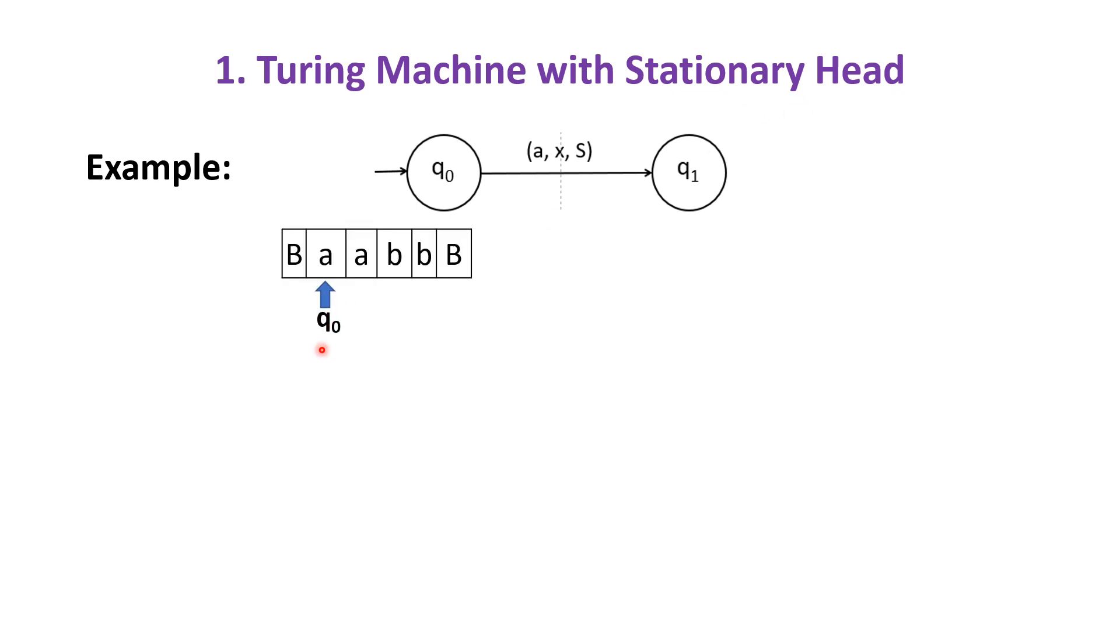Initially, the read-write head is pointing to A and at state q0. In the next move, A is replaced as x, state q0 is changed to q1, and the read-write head is still in the same cell.